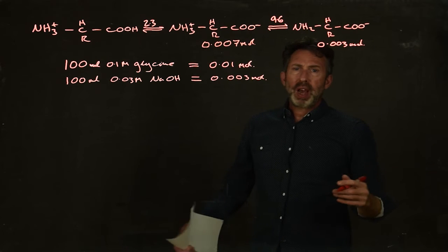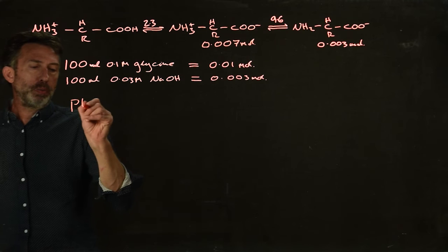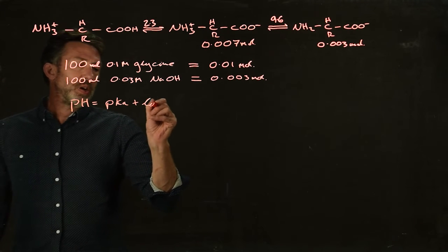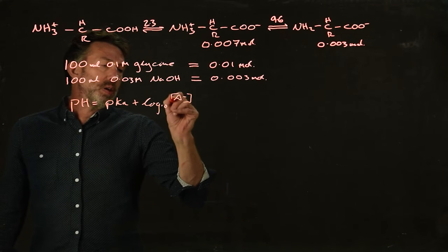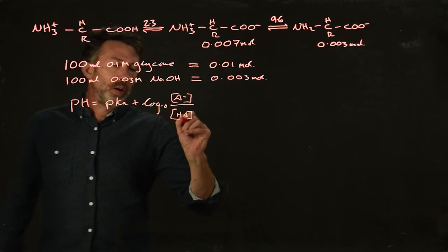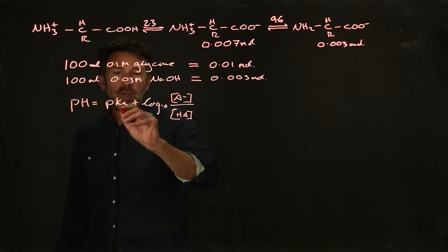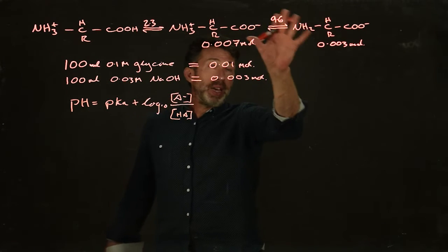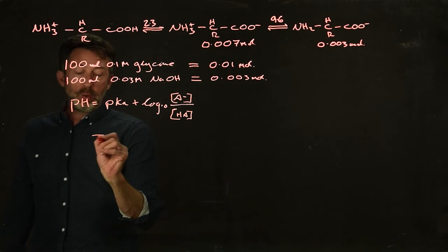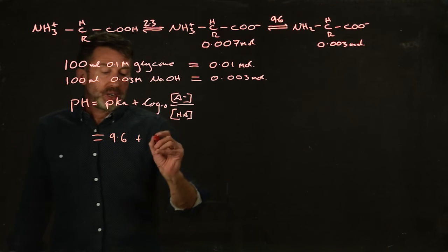What's the pH of this solution? We need to invoke the Henderson-Hasselbalch equation. The pH is equal to the pKa plus the log 10 of A minus divided by HA. The pH is what we're trying to find out. The pKa—it's got to be this pKa, doesn't it? It's got to be going from here to here. So the pH is equal to 9.6 plus the log 10.